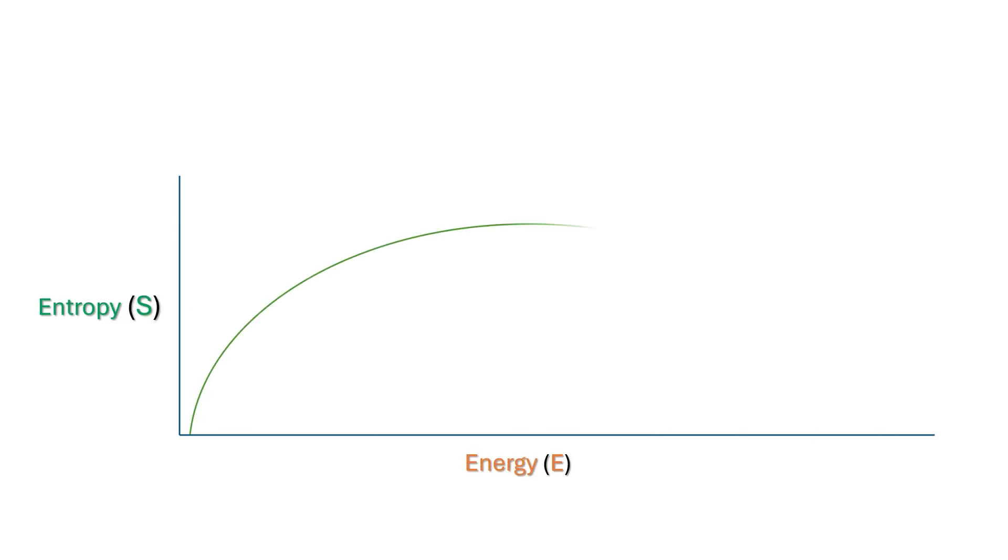For those systems that can assume negative temperatures, the temperature scale starts at plus zero, increases until infinity, then jumps to minus infinity and increases further until minus zero. Plus zero is perfectly ordered state for positive temperature and minus zero is perfectly ordered state for negative temperature. Plus zero and minus zero are not connected in this case. In fact, they are as far away as possible.